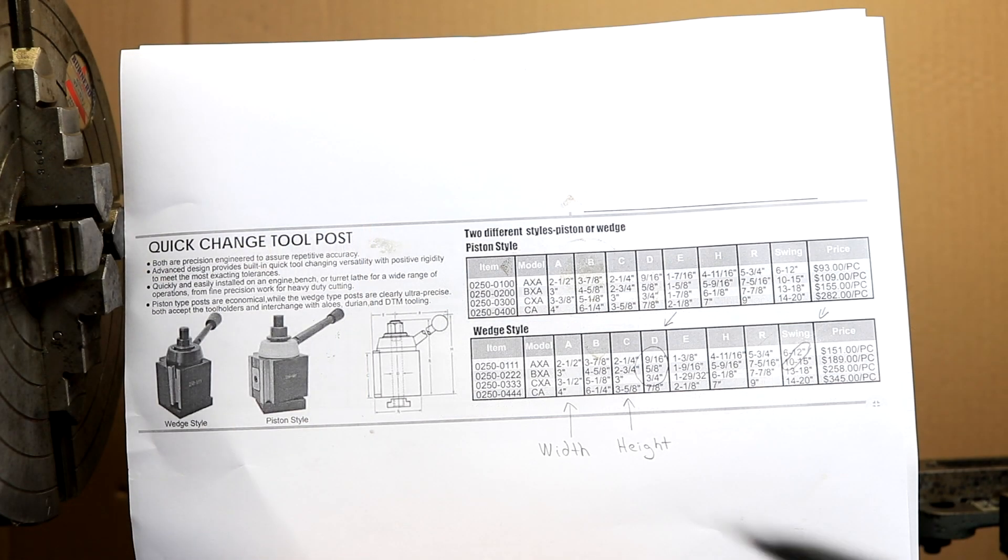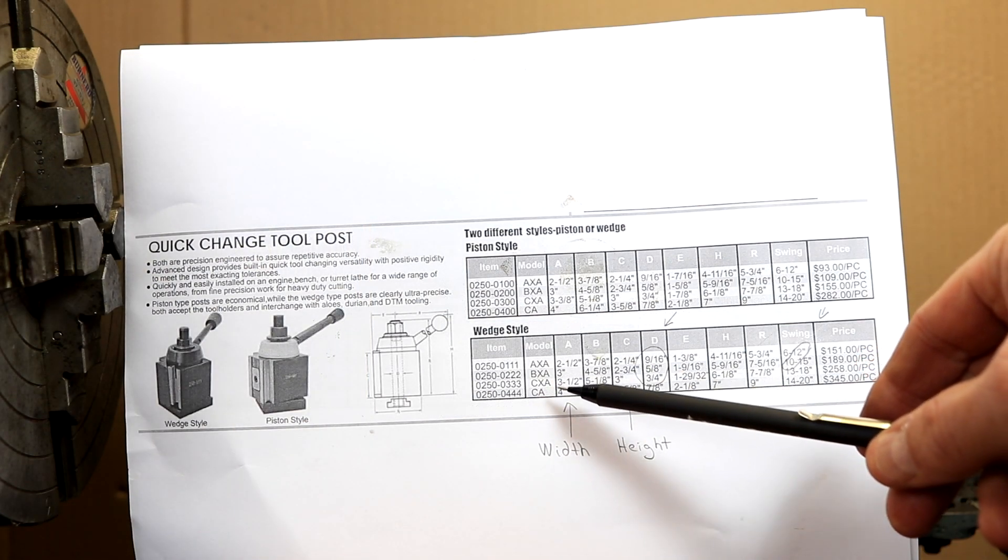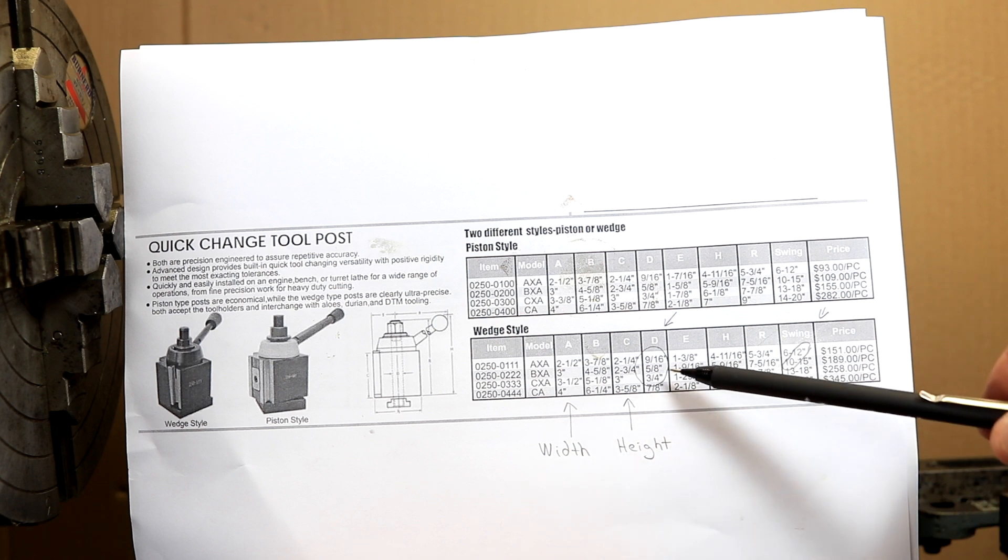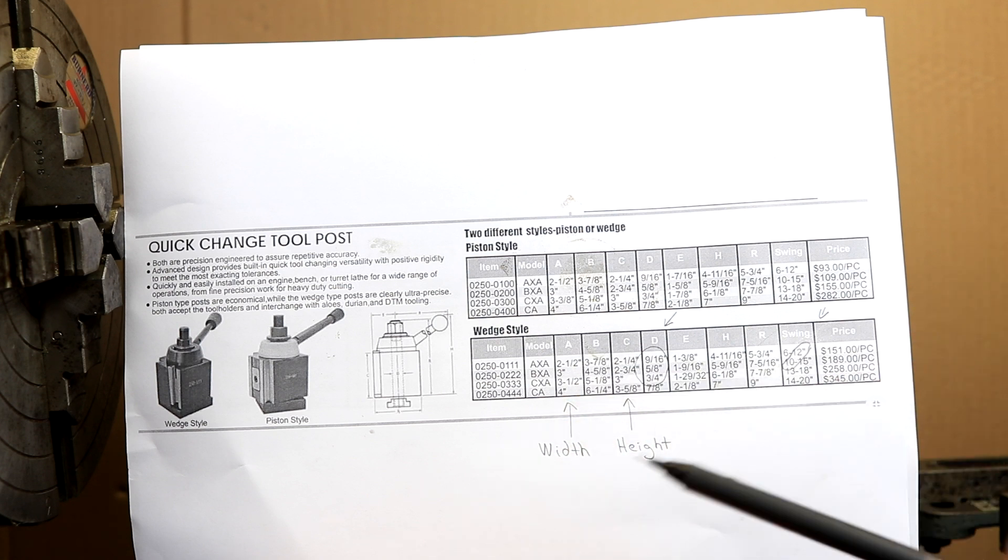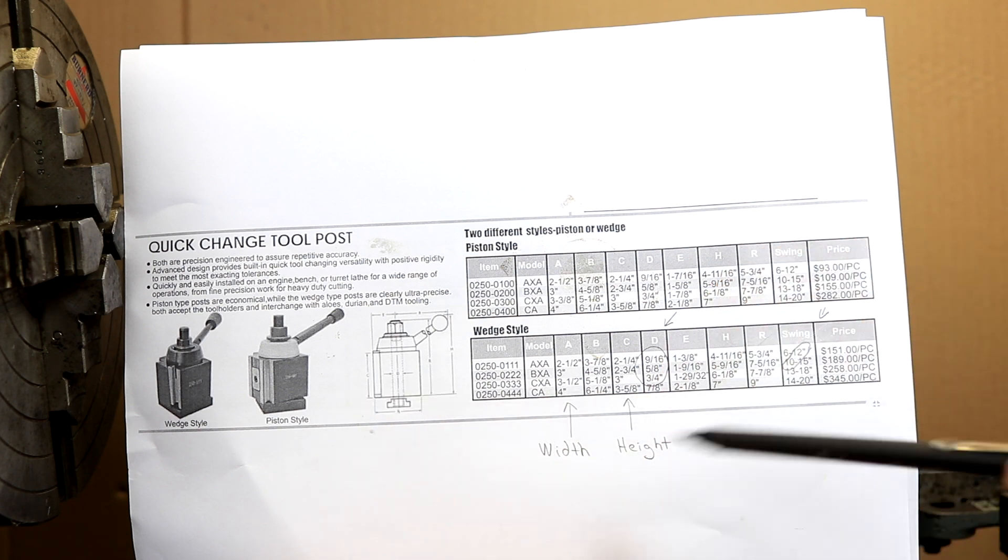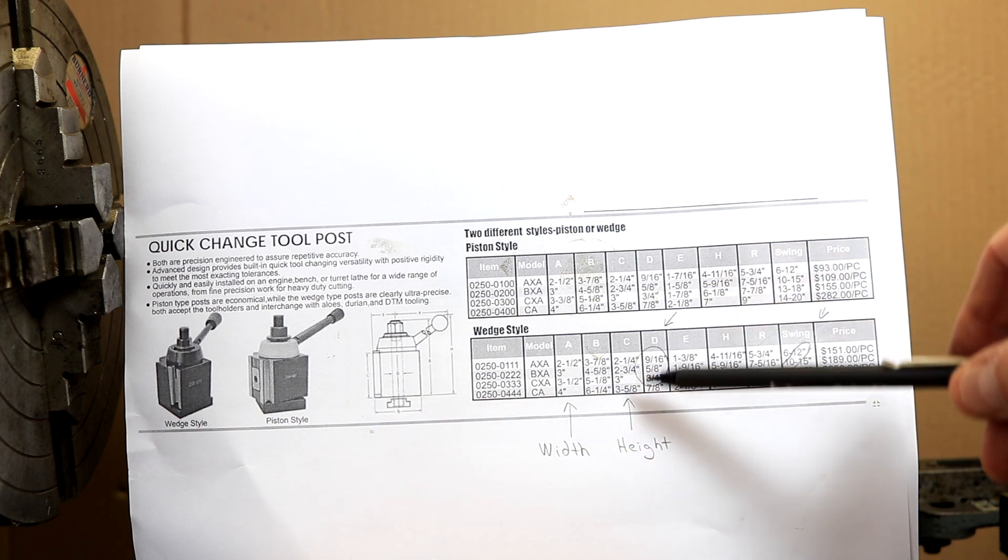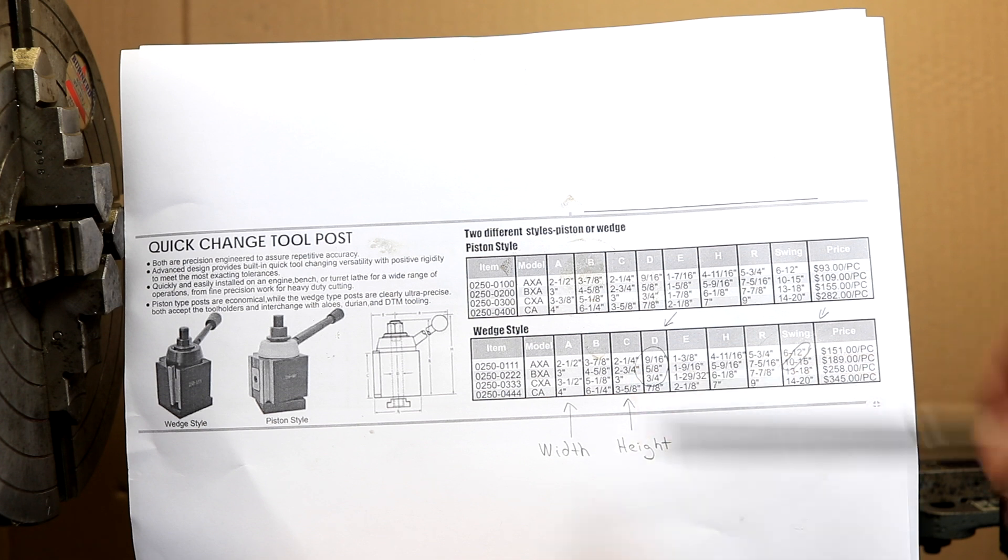CXA basically goes up to 3/4 inch as a standard and the depth would be 5/8ths inch. And from the manufacturer's website we see the difference between AXA and BXA and CXA for width there are 2 1/2, 3, and 3 1/2 inches. So that's that width. And we can also see that the height is 2 1/4, 2 3/4, or 3 inches. So only really a quarter inch higher for the CXA.